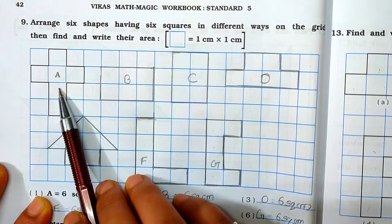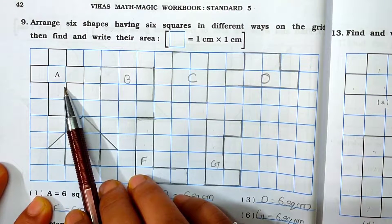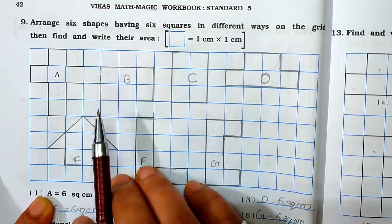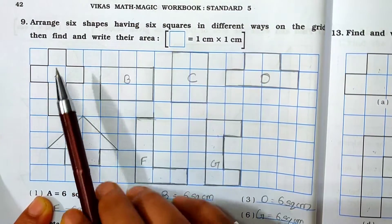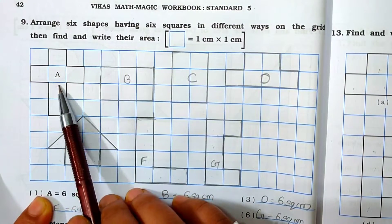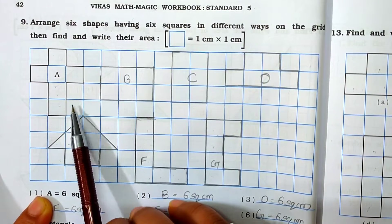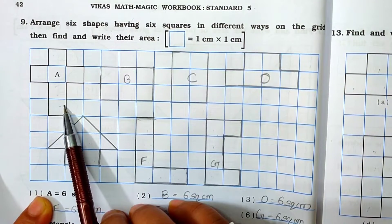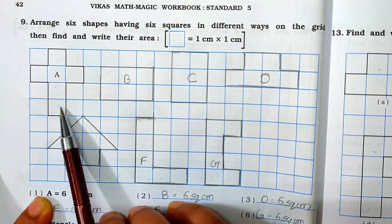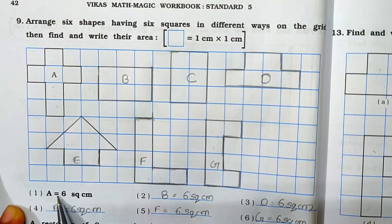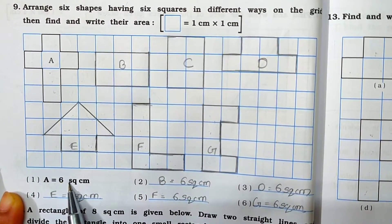See here, 1 shape is already given. 6 shapes you have to make, and from that 6 shapes, 1 shape is already given. See here the square: 1, 2, 3, 4, 5 and 6 squares are there. You have to find out the area of the square. So area is 6 square cm. Here it is given that A is equal to 6 square cm. This way you have to write it down.